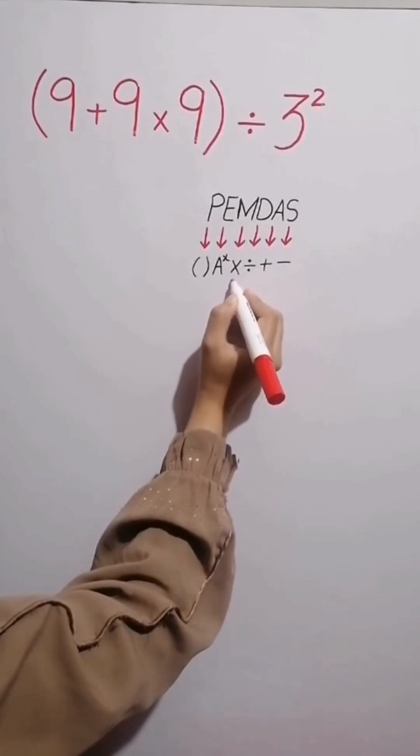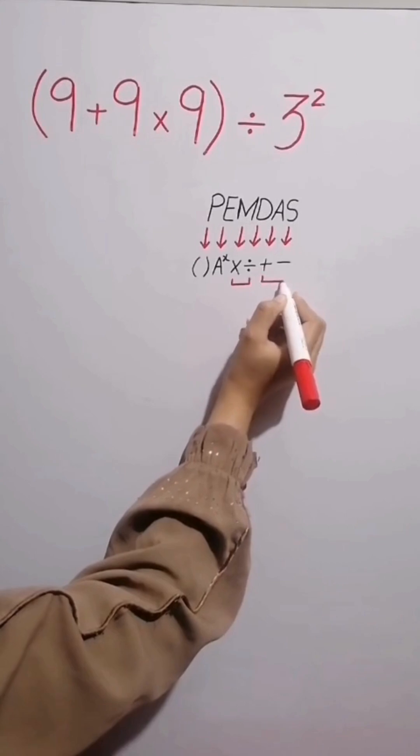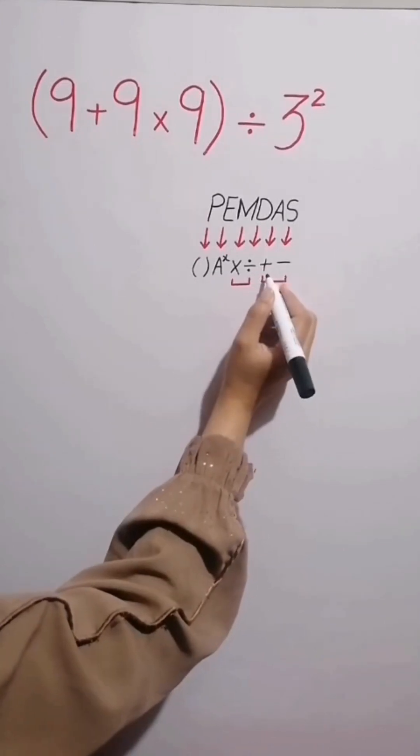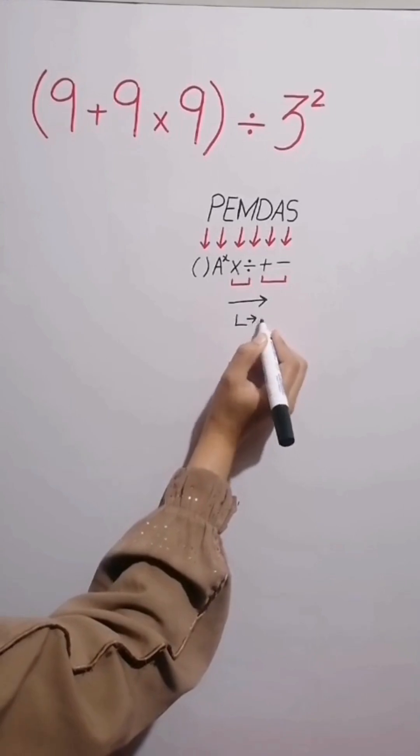Multiplication and division have the same level of priority. Also, addition and subtraction have the same level of priority. When we have both in an expression, we start from the left and simplify the question.